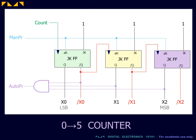In our example, the auto preset is triggered by the 110 state. Remember that for a flip-flop counter, the bits are always read from the most significant bit on the right to the least significant bit on the left.